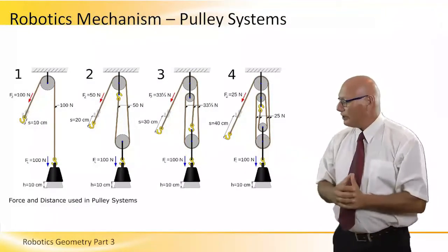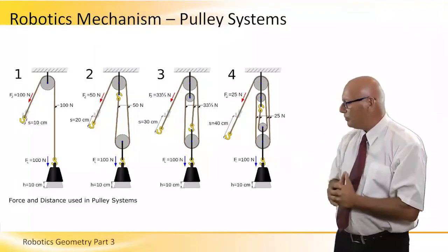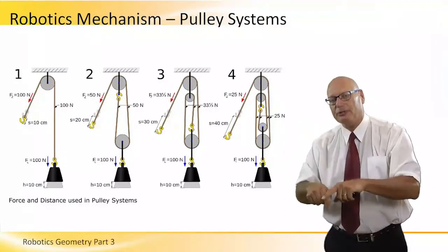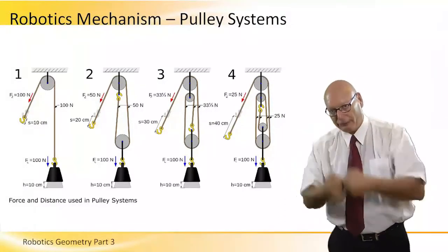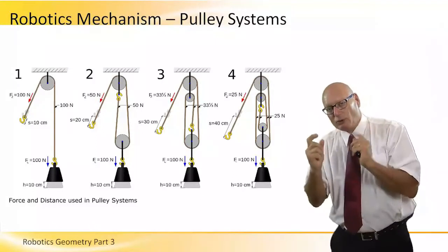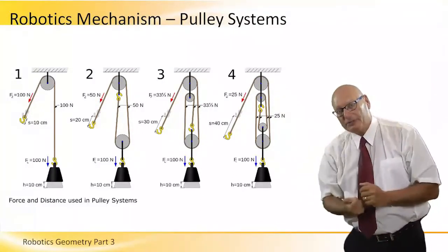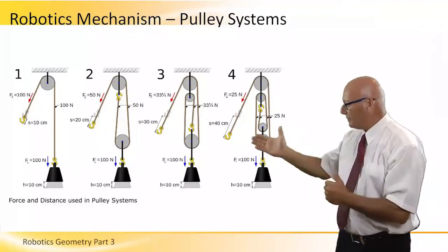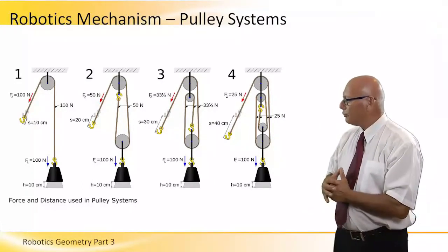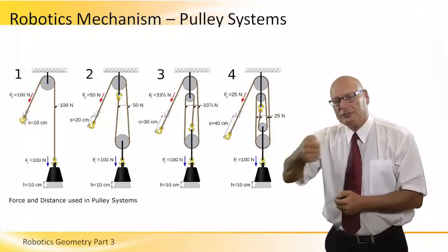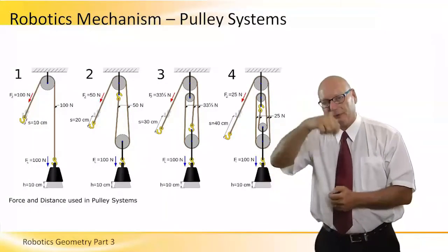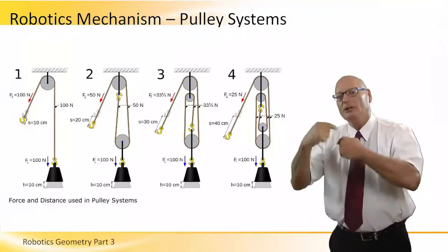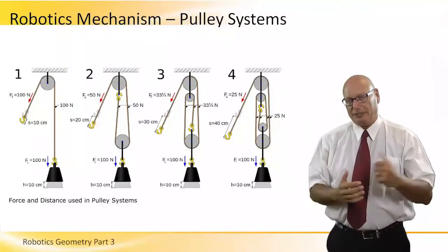In the second configuration of pulley system number two, we need to apply half the amount of Newton force, but the price we pay is pulling twice as long—20 centimeter displacement instead of 10. In configuration number three, we apply 33.3% of the 100 Newtons, but the robot has to move three times longer than in the first configuration.